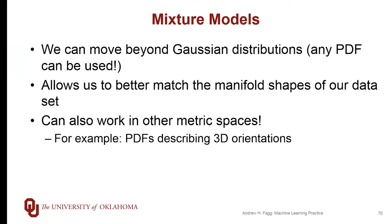Mixture models are a very powerful and general idea. We've used Gaussian distributions here, but we can actually use any probability density function we want. This can allow us to make more intelligent decisions — if we know something about the data we're presented with, and in particular the shape of the manifolds in the feature space, we can make choices about appropriate PDFs to better capture those shapes.